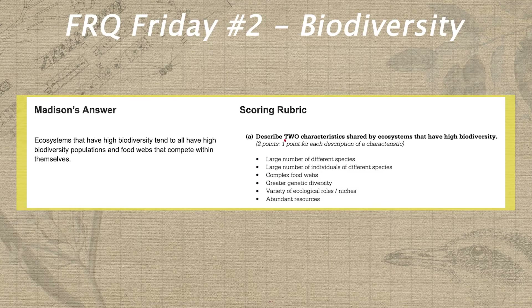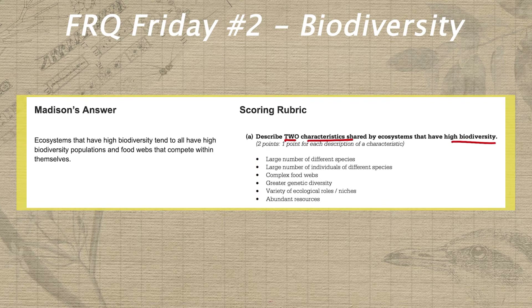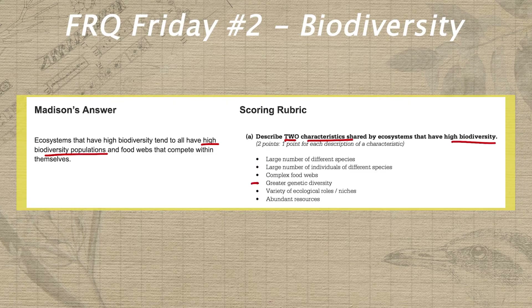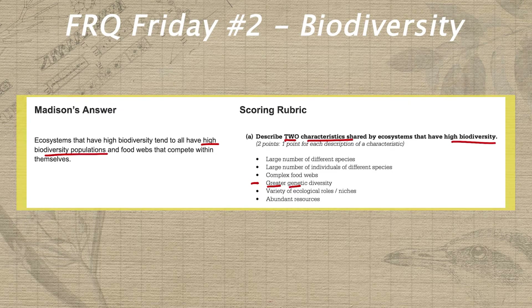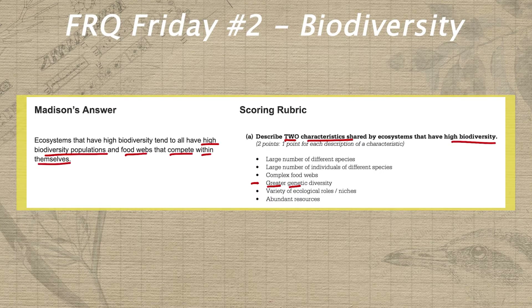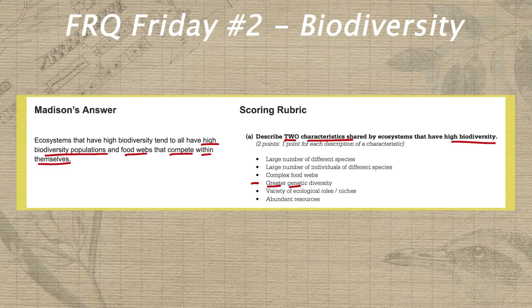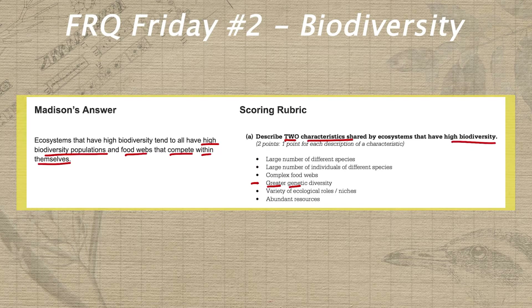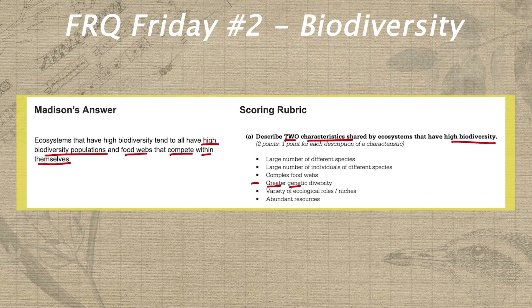In part A, Madison needs to describe two characteristics shared by ecosystems that have high biodiversity. Because she says that high biodiversity ecosystems have high biodiversity populations, she's not quite specific enough to earn the genetic diversity point — she would've needed to specify that these populations have high genetic diversity. She's on the right track for the complex food web point, but stating that they compete within themselves is a little imprecise. Competing within themselves isn't specific enough to convince a reader that she truly understands that complex food webs are characteristic of a high biodiversity ecosystem.